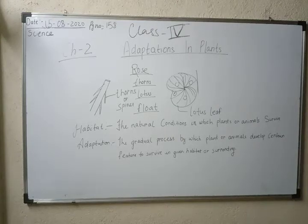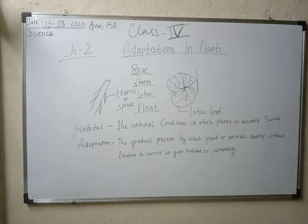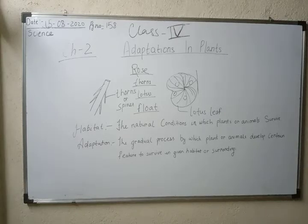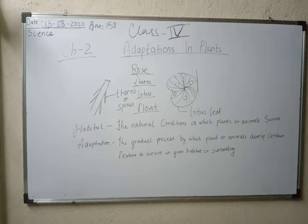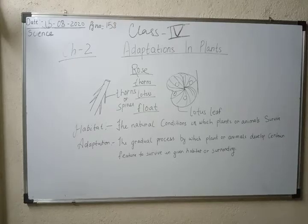The natural condition in which a plant or animal lives is called habitat. Habitat is the environment in which they survive. In simple terms, the given environment in which plants or animals survive is known as habitat. As the text states: 'The natural condition in which plants or animals survive is called habitat.'